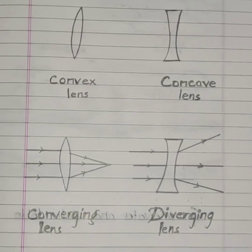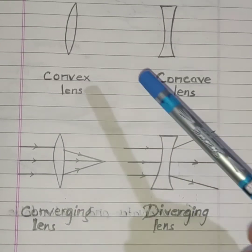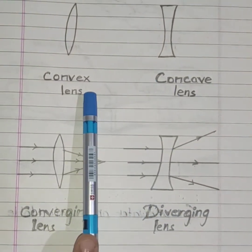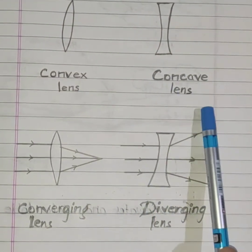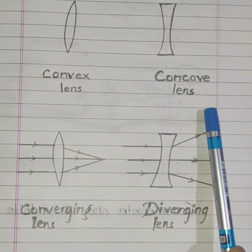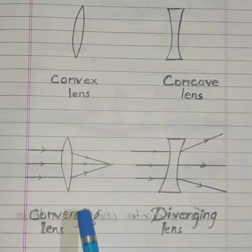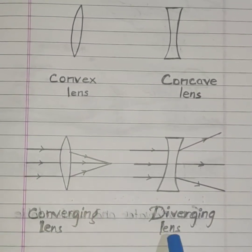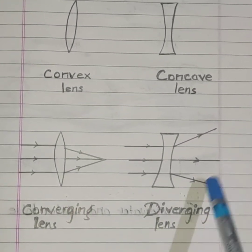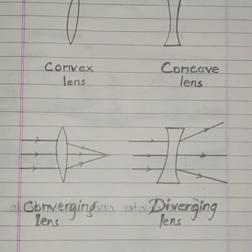Now, come to the next diagrams. This is a convex lens and this is a concave lens. Here this is a converging lens and this is a diverging lens.